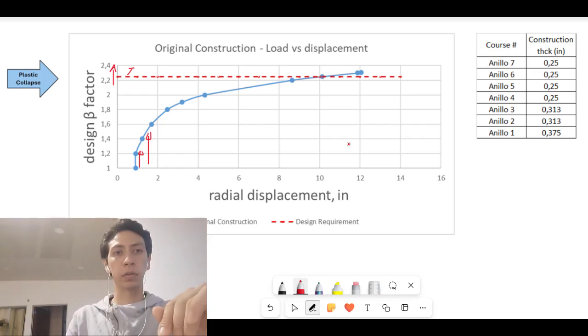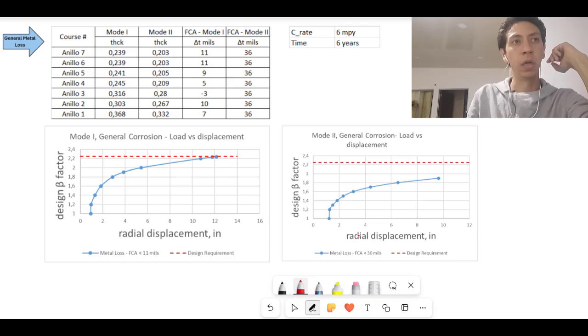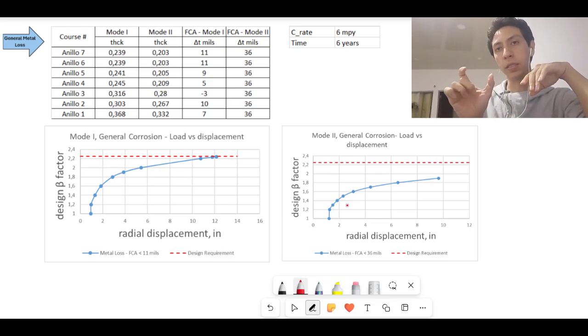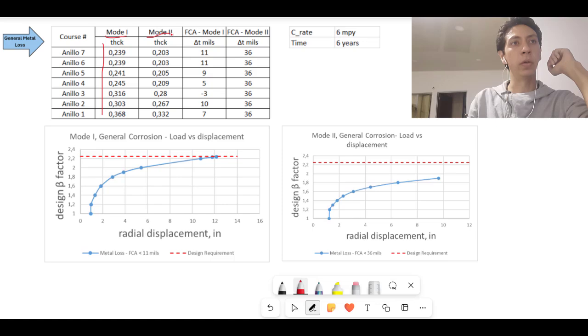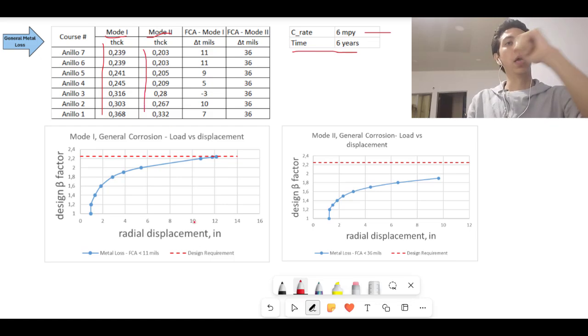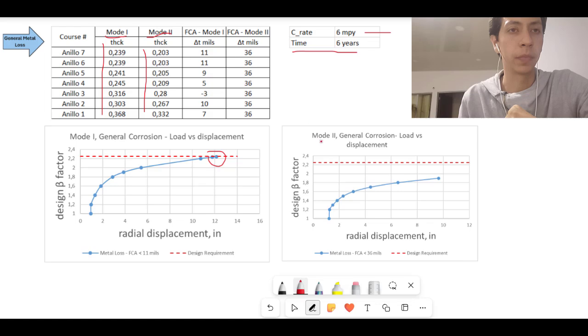What happens when you have general corrosion? When we have general metal loss, we consider thinning through time. It means currently I have more thickness in my tank than I will have in a couple of years. So we consider mode one with actual inspection with these thicknesses. And we will consider mode two based on a corrosion rate of 6 MPY in a next inspection of 6 years with these values of thickness. So currently, in a load versus displacement, we are at the very limit from the requirements of design.